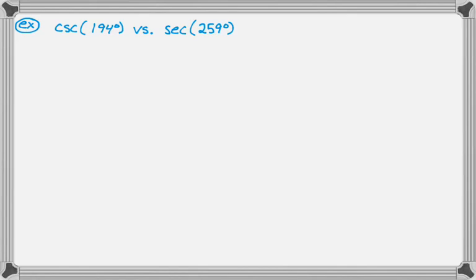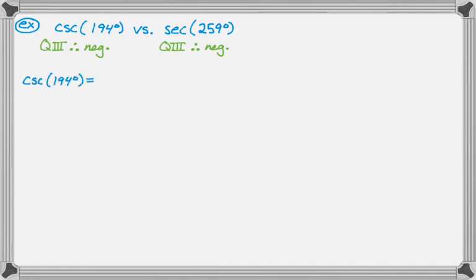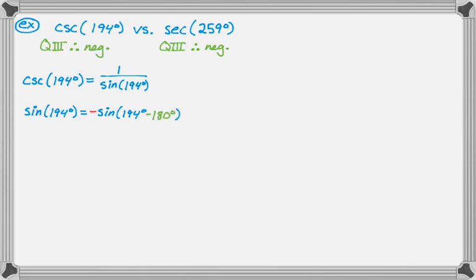Example five, the most complicated: compare cosecant of 194 to secant of 259. Both 194 and 259 are in quadrant three where sine and cosine are negative, so both cosecant and secant are negative. For cosecant of 194: 1 over sine of 194, and sine of 194 is negative — giving negative sine of 194 minus 180, which is negative sine of 14.